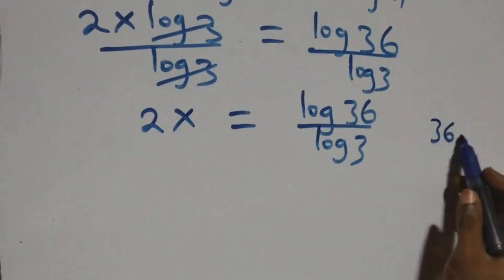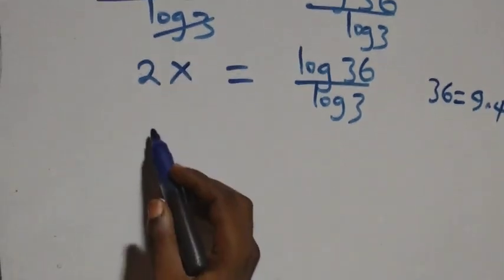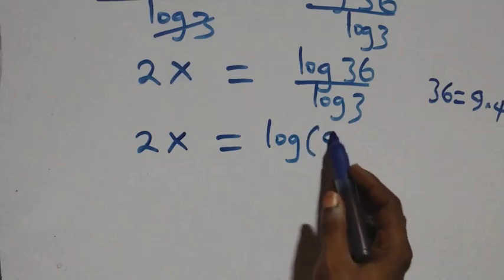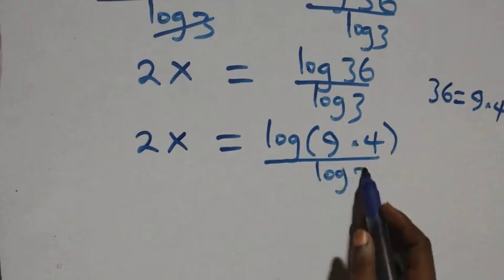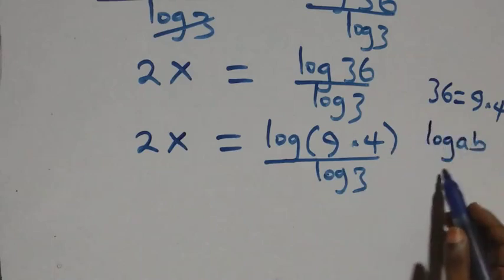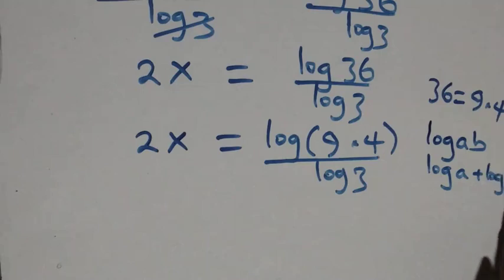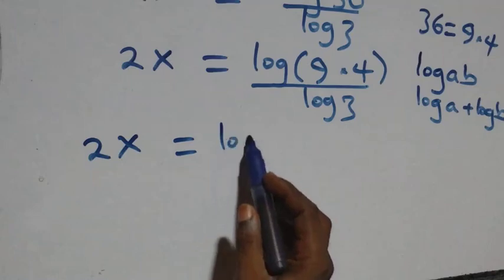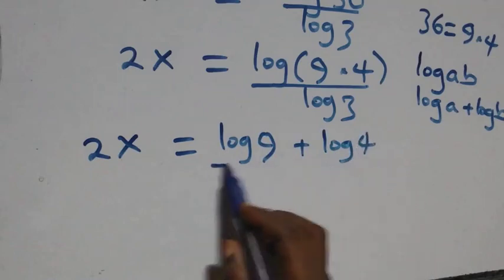The next step: we can write 36 as 9 times 4. So what we have becomes 2x equals log of 9 times 4, over log 3. Then we apply the law of logarithms: log of A times B is the same thing as log A plus log B.